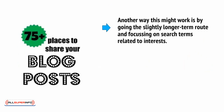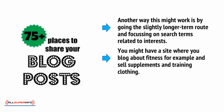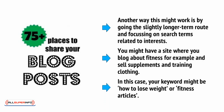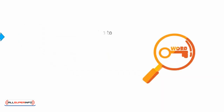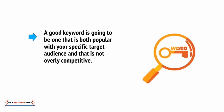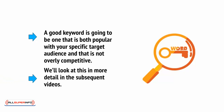Another way this might work is by going the slightly long-term route and focusing on search terms related to interests. You might have a site where you blog about fitness and sell supplements and training clothing. In this case, your keyword might be 'how to lose weight' or 'fitness articles.' A good keyword is going to be one that is both popular with your specific target audience and not overly competitive. We'll look at this in more detail in the subsequent videos.